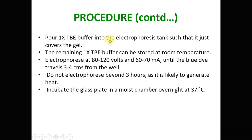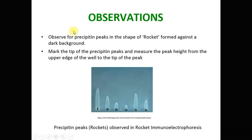1x DBE buffer is poured into the electrophoresis tank such that it just covers the gel; remaining buffer can be stored at room temperature. Electrophoresis is carried out at 80–120 volts and 60–70 mA current until the blue dye travels 3–4 cm from the well. Electrophoresis should not be conducted for more than 3 hours as it would generate heat. After electrophoresis, the glass plate is incubated in a moist chamber overnight at 37 degrees Celsius. After incubation, look for the presence of precipitant peaks in the shape of a rocket against a dark background.